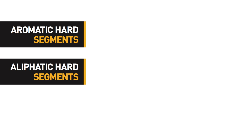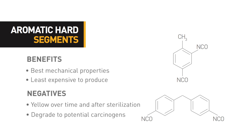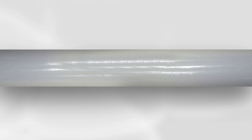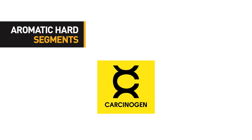The hard segment is usually categorized as either an aromatic-based diisocyanate or an aliphatic-based diisocyanate. The aromatic diisocyanates produce polymers with the best mechanical properties and are the least expensive to produce due to their low-cost manufacturing and readily available starting materials. However, when used in medical devices, the aromatic hard segments have some serious drawbacks. First, over time, aromatic polyurethanes are prone to discoloration when exposed to light, especially UV, and after sterilization. Aromatic urethanes also break down to carcinogenic diamines, so great care must be taken when choosing a sterilization technique.